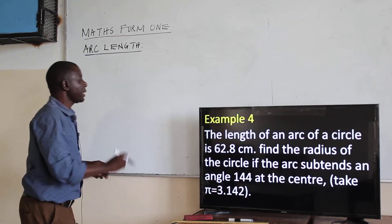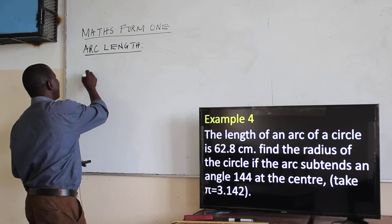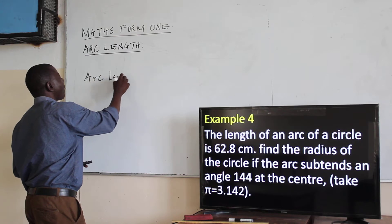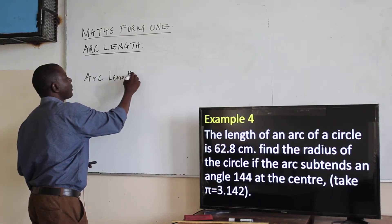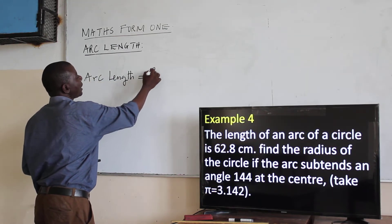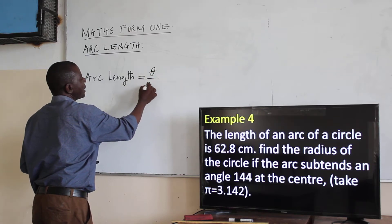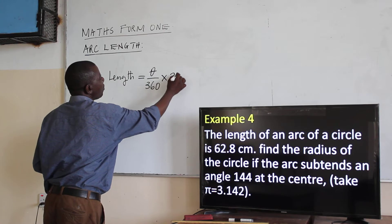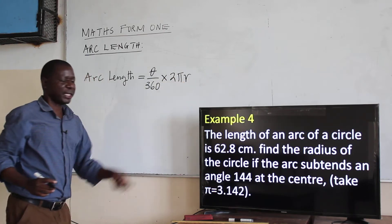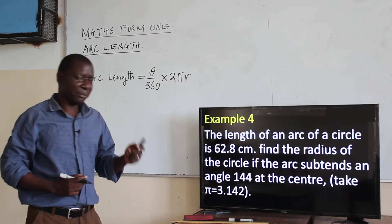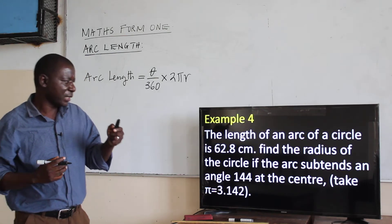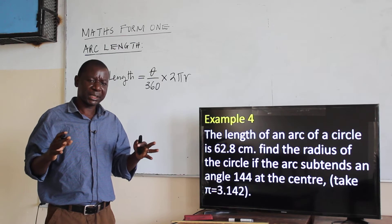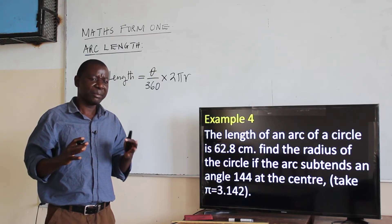We have the formula. The arc length is given by the angle divided by 360, times 2 pi R. The angle that subtends the arc gives us the fraction of the circle made by that arc.